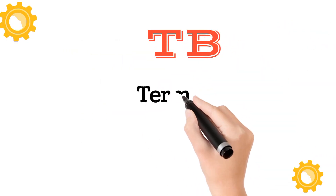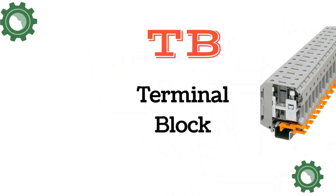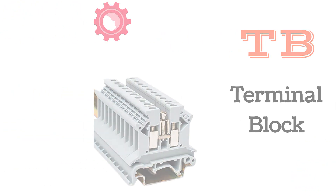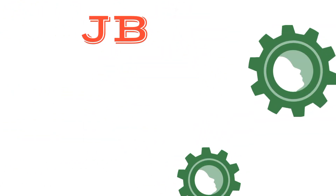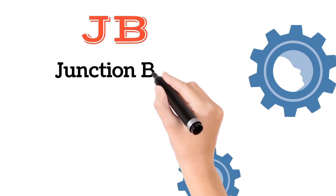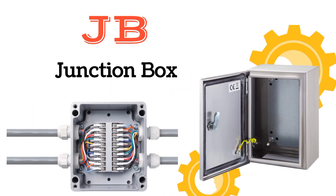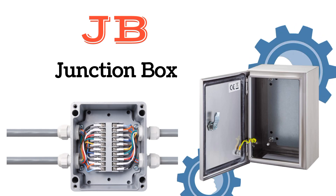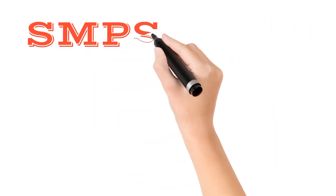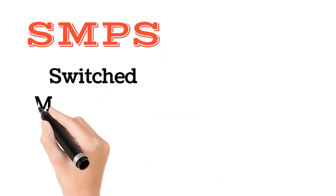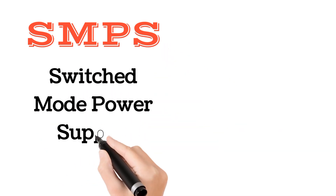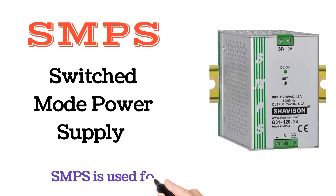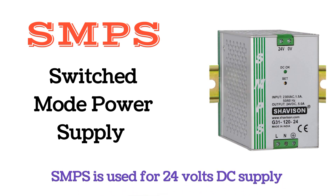TB means terminal block. JB means junction box — a junction box has terminal blocks inside it. SMPS means switched mode power supply. SMPS is used for 24-volt DC supply; the DC supply for transmitters from a PLC panel comes from the SMPS.